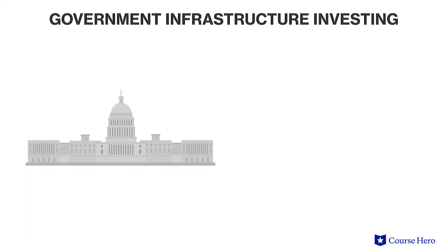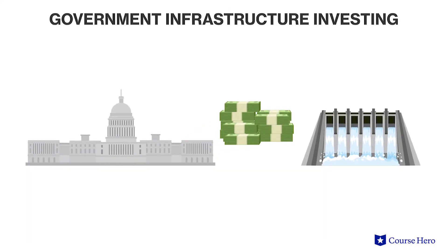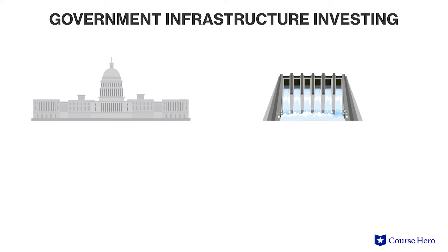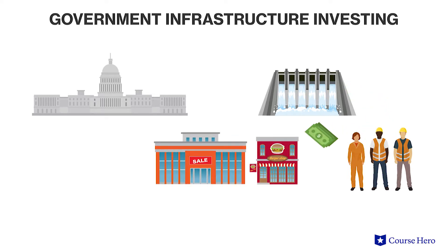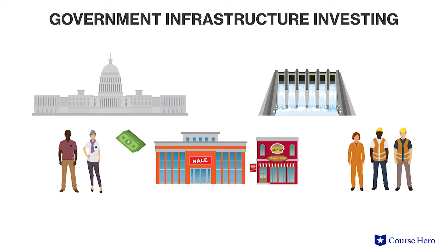For instance, if the government invests $1 million on an infrastructure project, it is contributing more than $1 million to the economy because the project requires the hiring of workers who receive income. In turn, their income is spent elsewhere, and that money spent becomes another person's income, and so on. The benefit of that project expenditure then is multiplied.